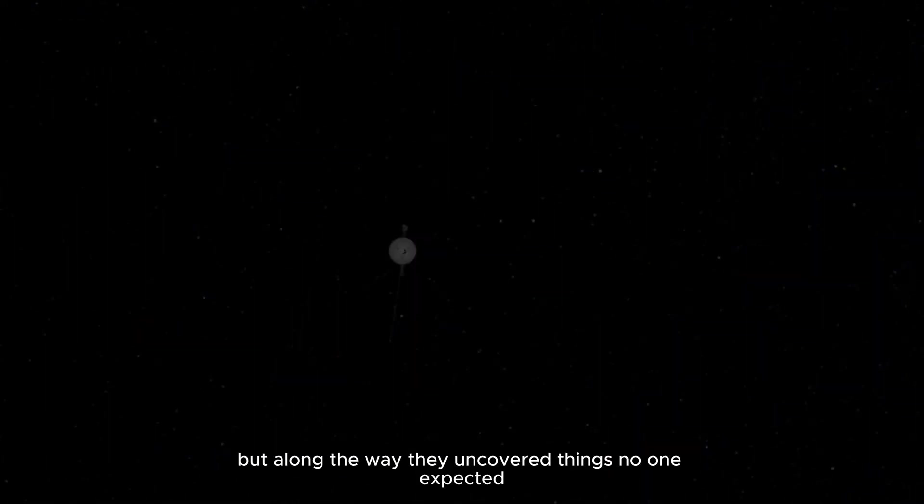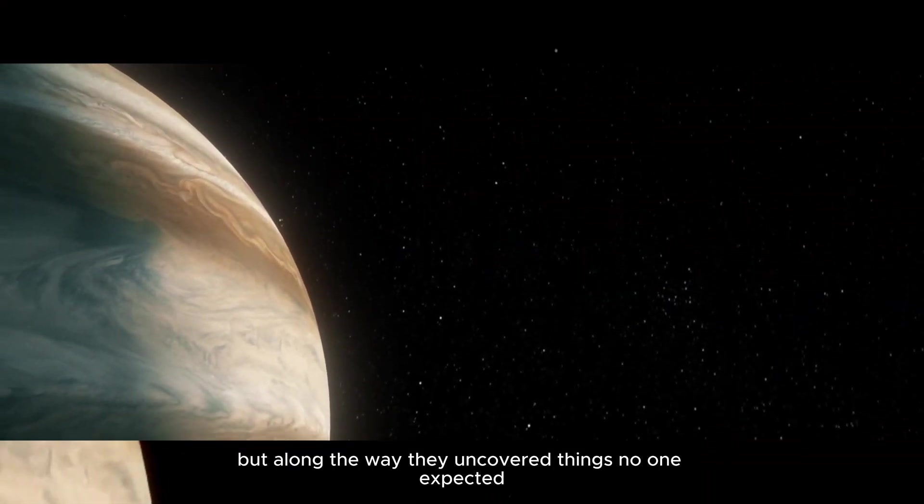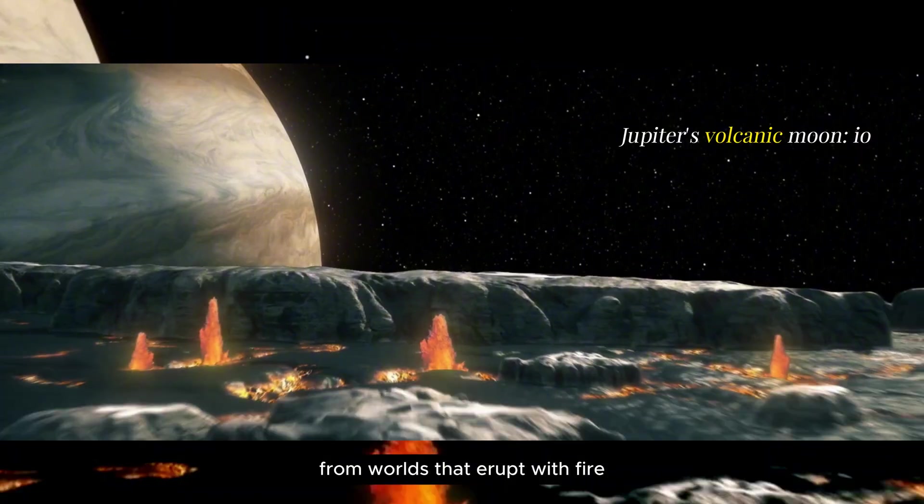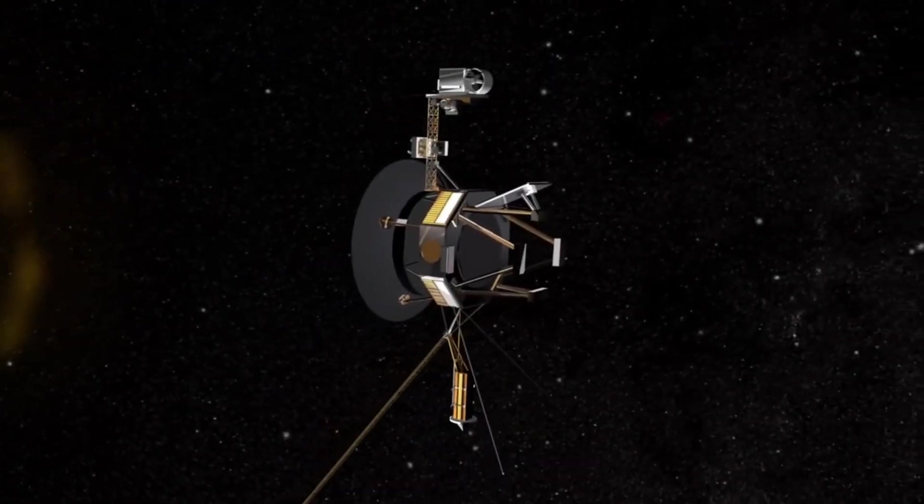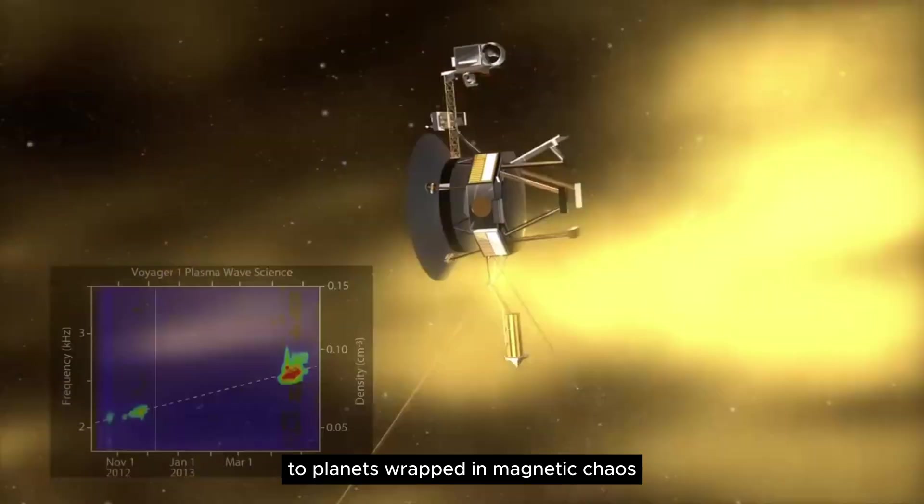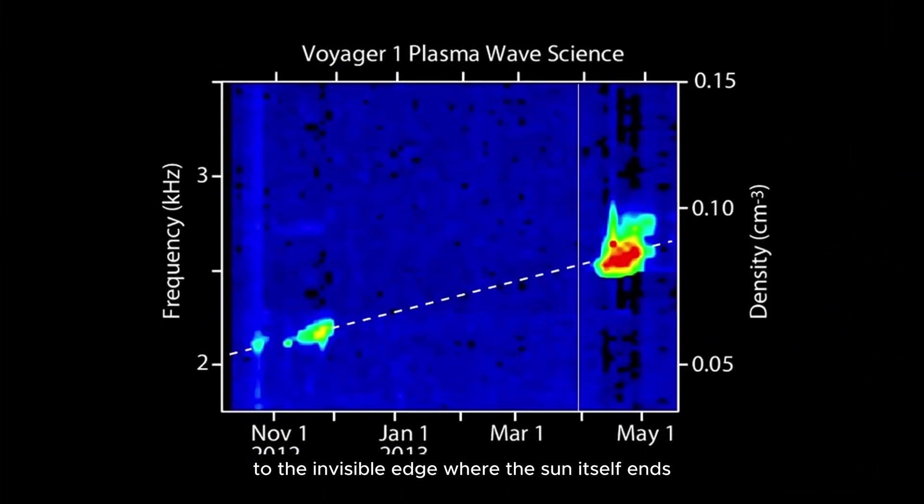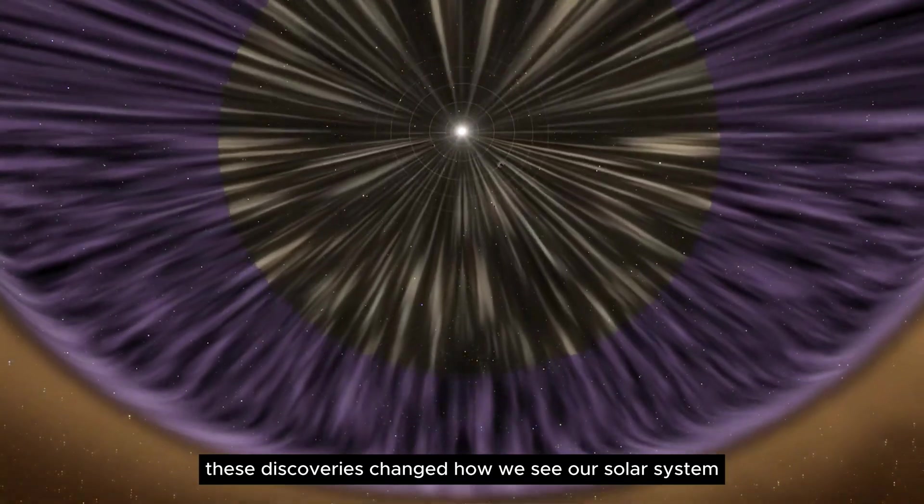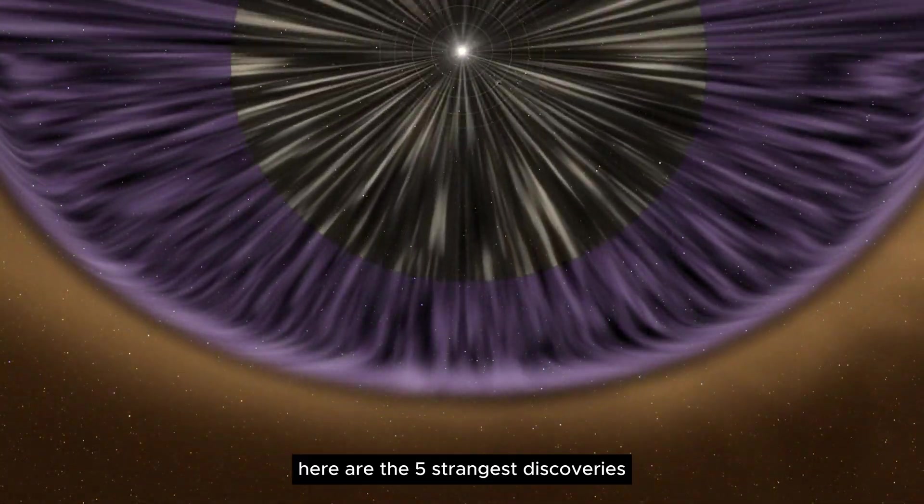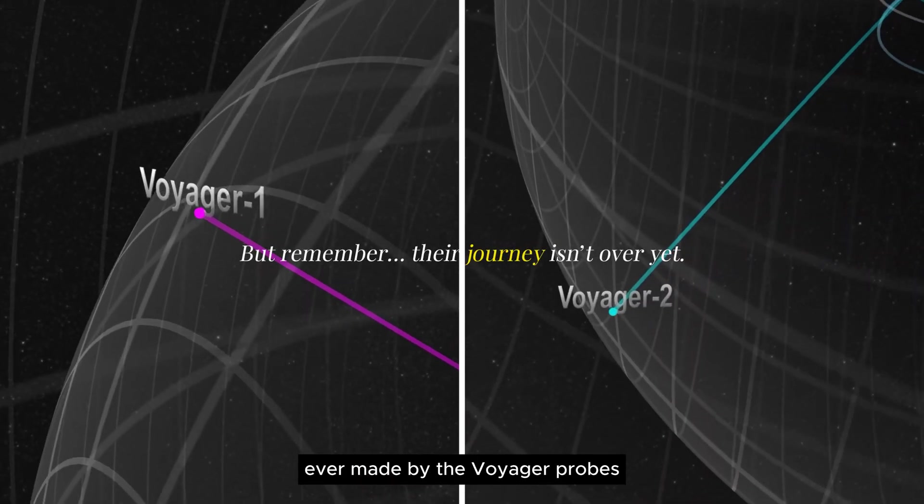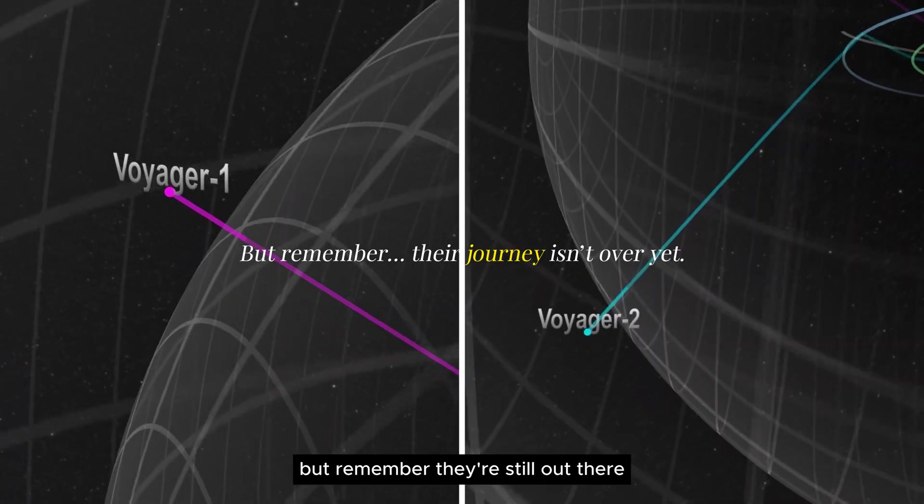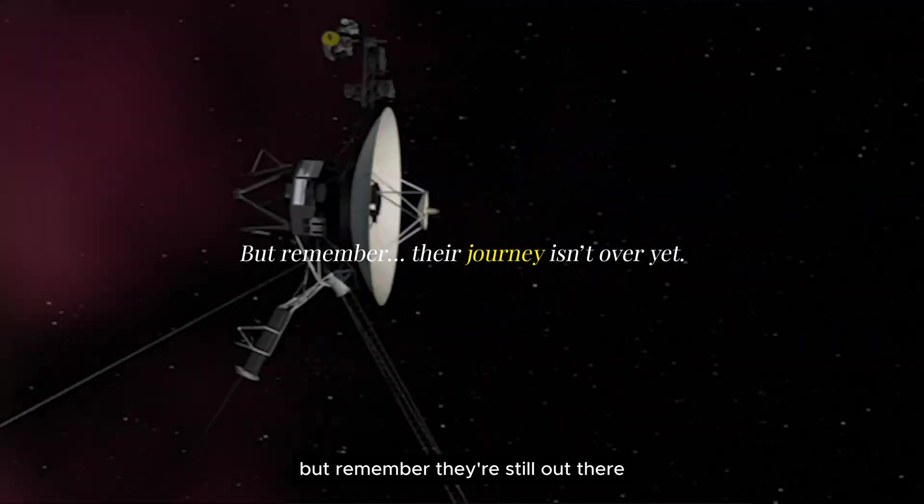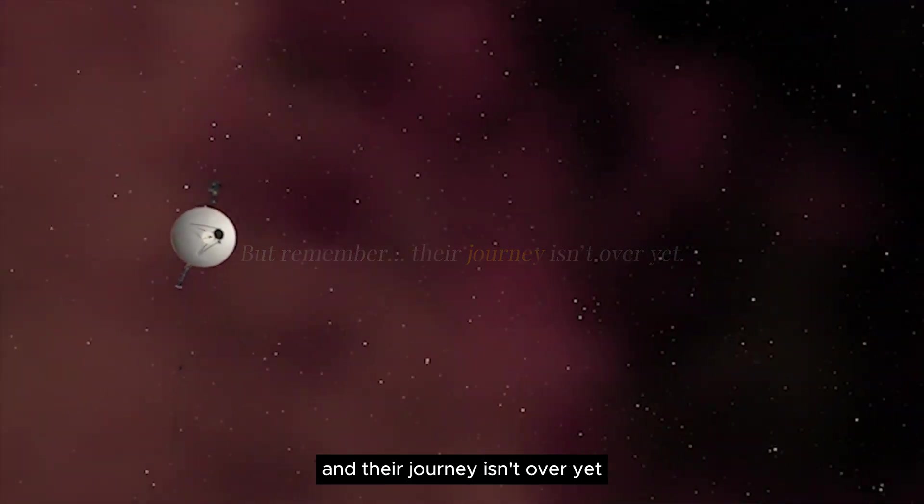But along the way, they uncovered things no one expected, from worlds that erupt with fire, to planets wrapped in magnetic chaos, to the invisible edge where the sun itself ends. These discoveries changed how we see our solar system forever. Here are the five strangest discoveries ever made by the Voyager probes. But remember, they're still out there, and their journey isn't over yet.